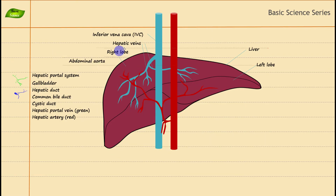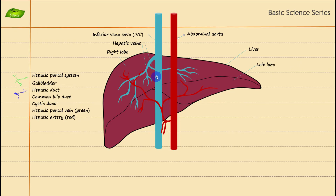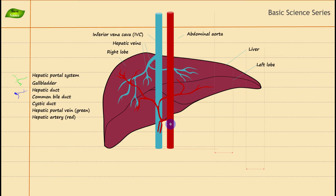Next is the abdominal aorta. This is your abdominal aorta — the main blood vessel in the abdominal cavity. Its role is to transfer oxygenated blood, because for proper functioning of the cells you need oxygen. So its role is to provide oxygenated blood to the abdominal organs.